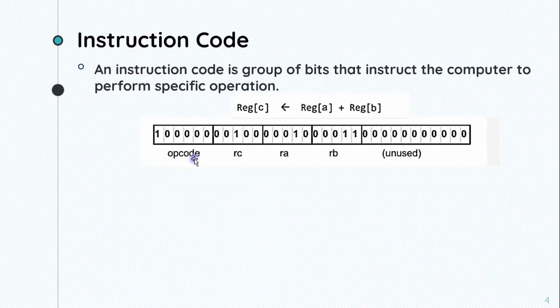A 32-bit or 4-byte data instruction includes different parts: the opcode, register c, register a, register b, and unused bits.